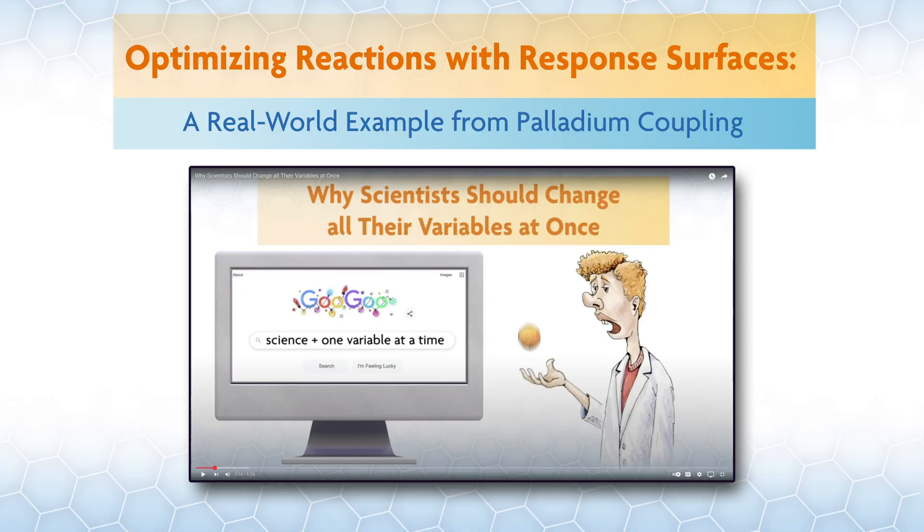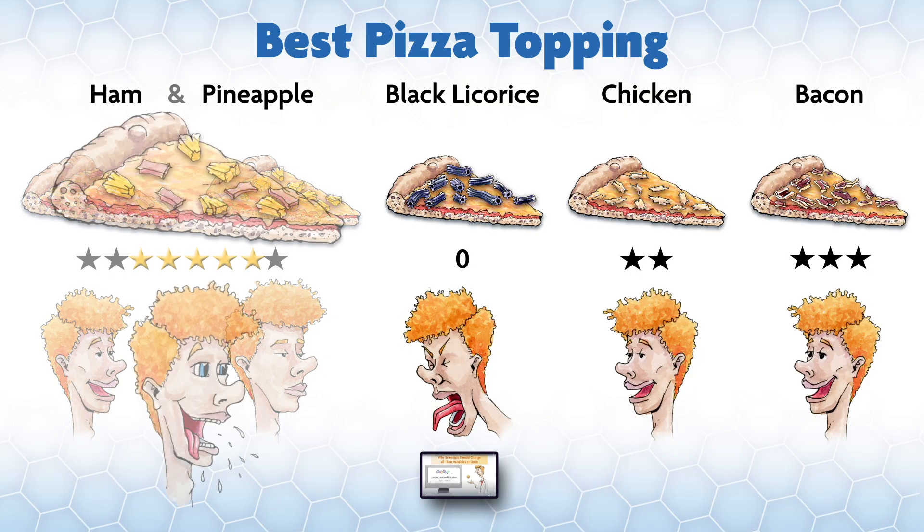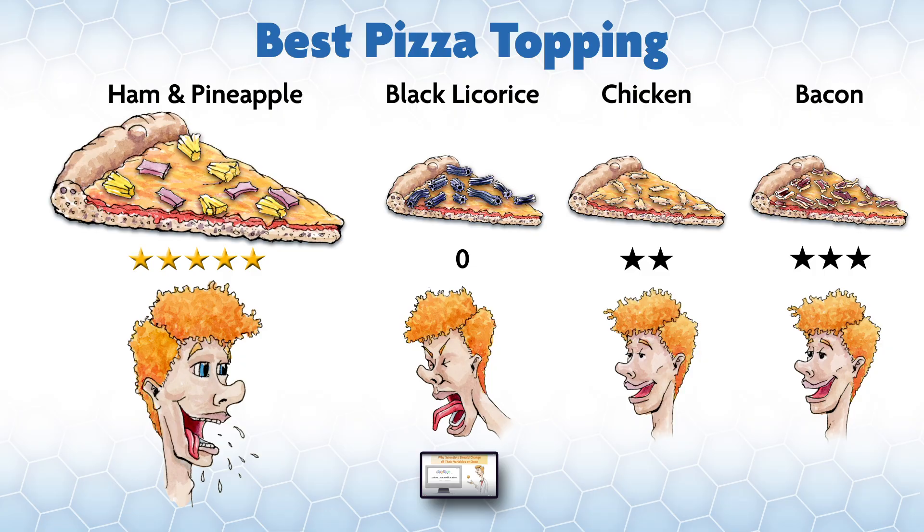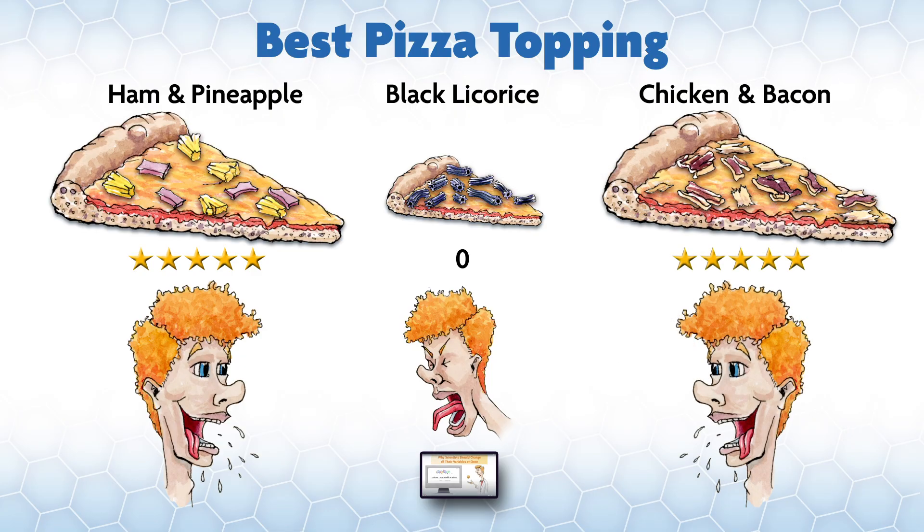If you watched our video on why scientists should sometimes change all their variables at once, you know that one variable at a time optimization can be like trying to find the best pizza topping by only testing one at a time. Who likes ham pizza or pineapple pizza? But some think ham and pineapple pizza is magic. Or in my case lately, I've been eating a lot of chicken and bacon pizza. Don't knock it till you tried it.